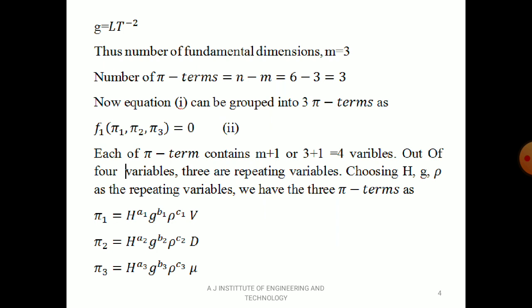Each pi term contains M + 1 variables, where M is the number of fundamental dimensions. So M = 3, therefore each pi term contains 4 variables. Out of 4 variables, 3 are repeating variables. The number of repeating variables should equal the number of fundamental dimensions, which is 3.